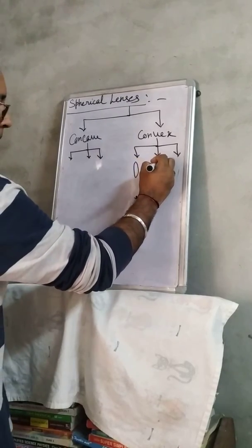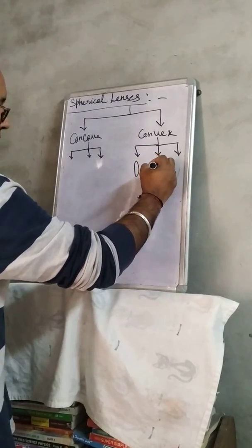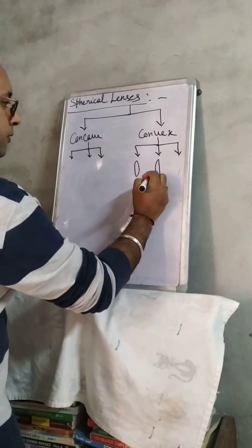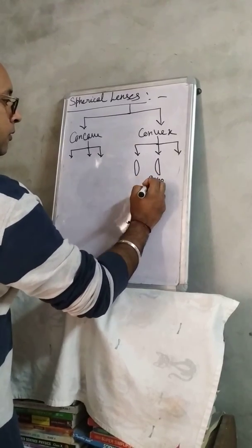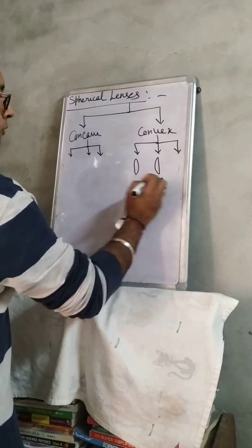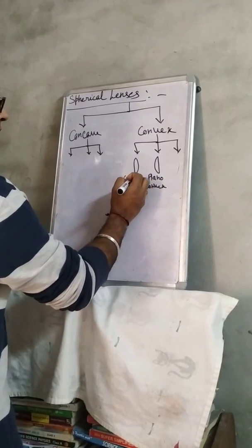One is planoconvex. This is planoconvex. This is a convex lens.